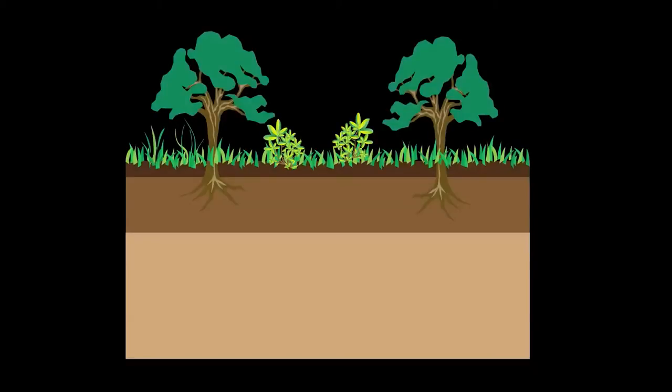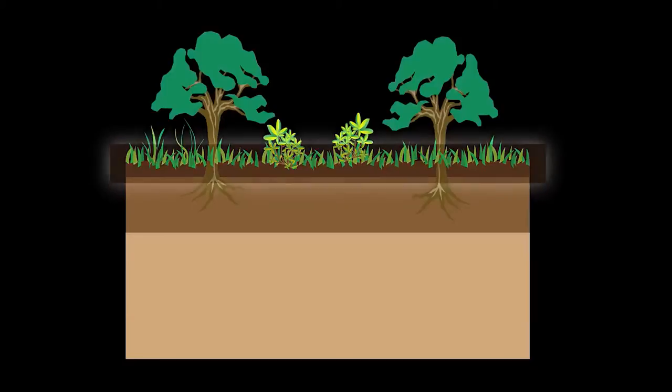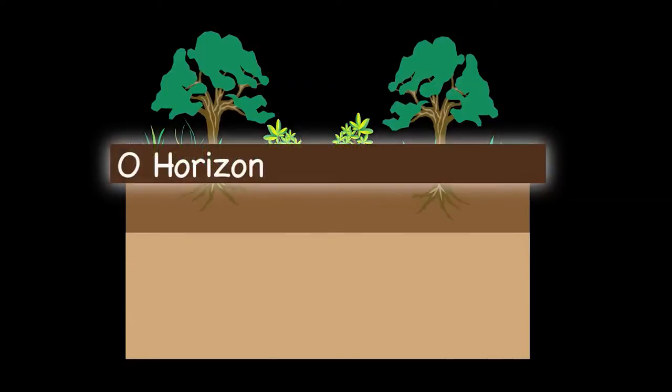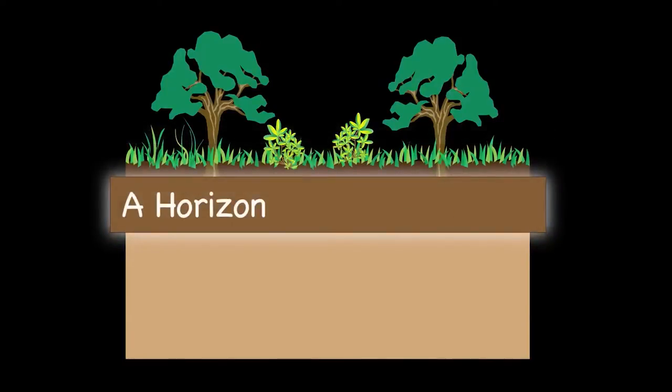For example, the topmost horizon is labeled O. The second horizon below that is labeled A. The A horizon is the topmost mineral horizon, which is dominated by organic matter.